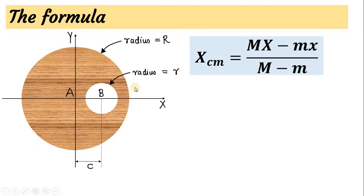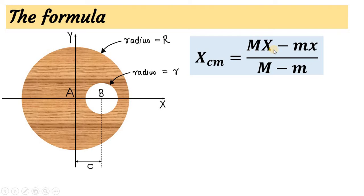Now we are looking at the disc from the top view. A is the centre of the bigger disc and B is the centre of the small disc that has been cut and removed — so B is now the centre of the hole. C is the distance between centres A and B. The formula for the centre of mass for cut bodies uses a minus sign: x_cm equals (M·X − m·x) divided by (M − m).